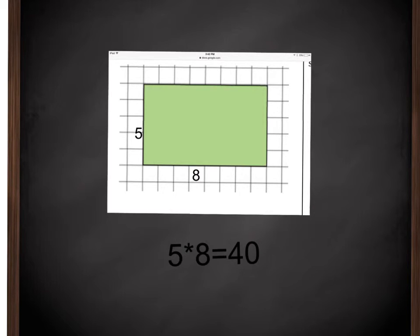And as you have all learned from 1st grade, you have to label. So this would be the label for area and for a 2-dimensional shape. It would be square units. In this case, it's 40 square units.